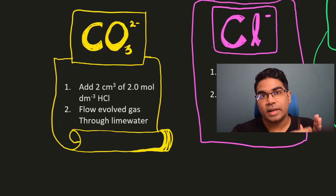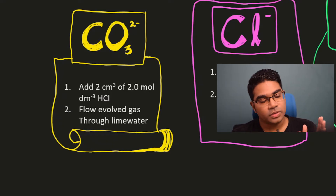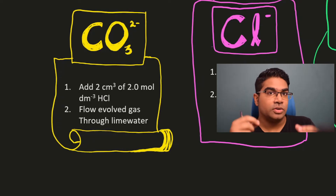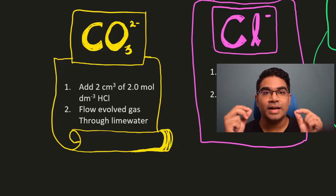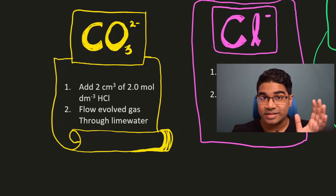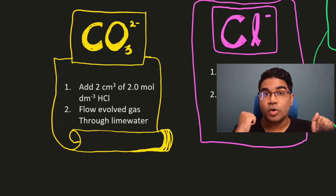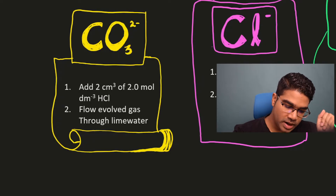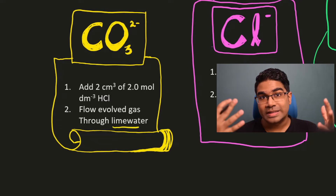Now, how do we confirm that carbon dioxide gas is released? First, the observation is you will see that a colorless gas is released. But a colorless gas can be many things, such as oxygen or hydrogen gas. So to confirm that it is indeed carbon dioxide gas, we have to pass the gas evolved through lime water — and this is the test for carbon dioxide gas. When you pass the gas evolved through lime water, what you will get is the lime water will turn cloudy.